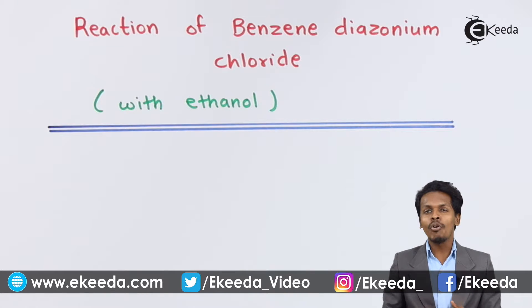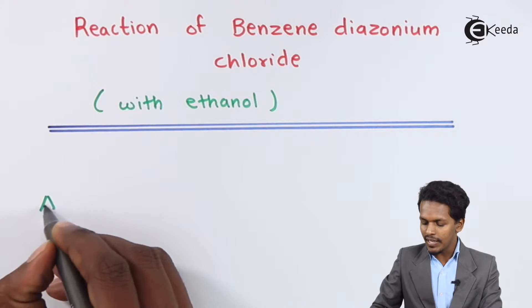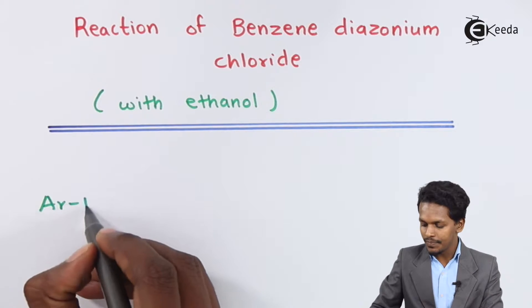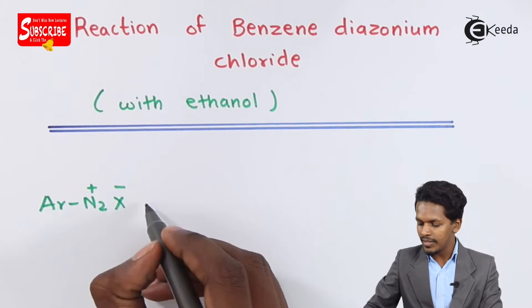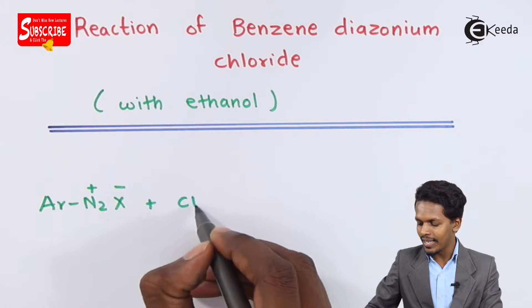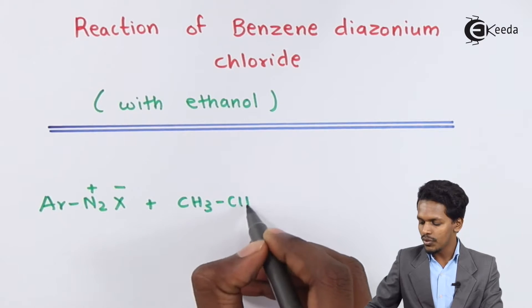Before talking about the reaction of benzene diazonium chloride with ethanol, let me give you a general reaction. Suppose I'm considering an aryl diazonium salt, Ar-N2.X, and if it is treated with ethanol, CH3-CH2-OH.